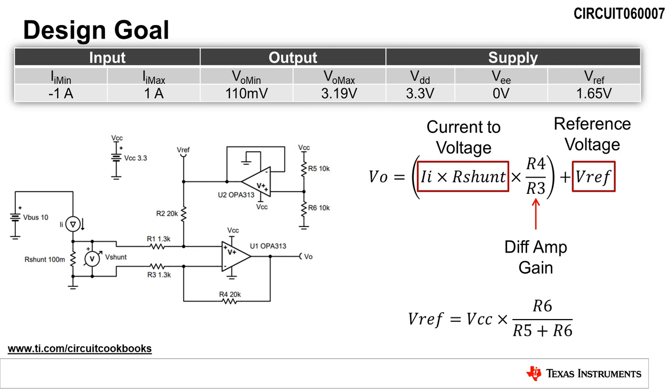The first design goal of this circuit is to convert a maximum input current of 1 amp to a maximum output voltage of 3.19 volts and a minimum load current of minus 1 amp to a minimum output voltage of 110 millivolts. In low side current sensing applications, it's common to set the maximum shunt voltage so that the load's ground potential is nearly equal to that of the op amp and ADC. In this circuit, the maximum shunt voltage, V shunt, is set to 100 millivolts. Lastly, a reference voltage of 1.65 volts is required to bias up the output of the amplifier.